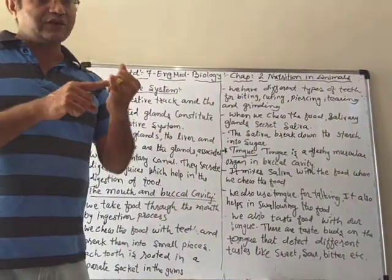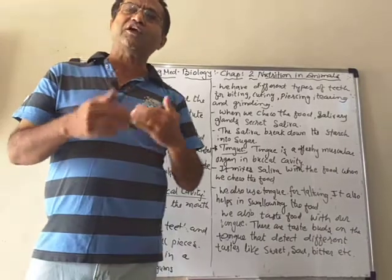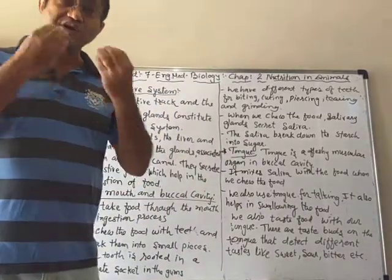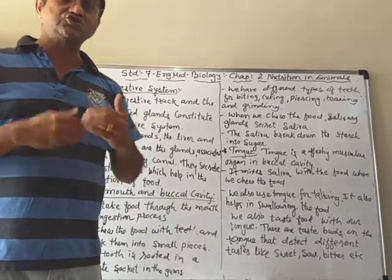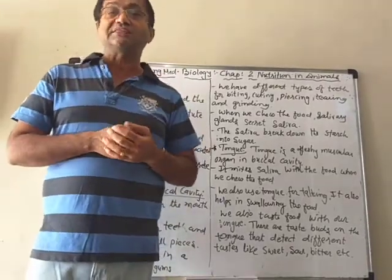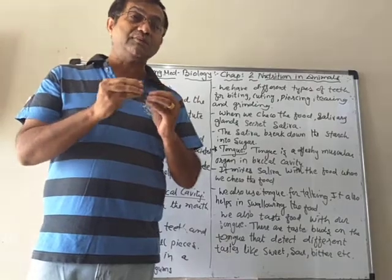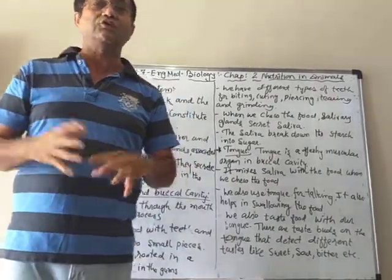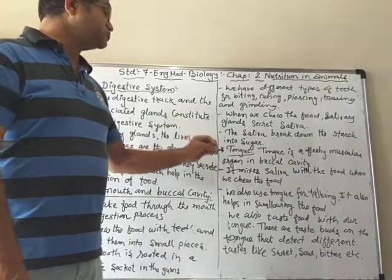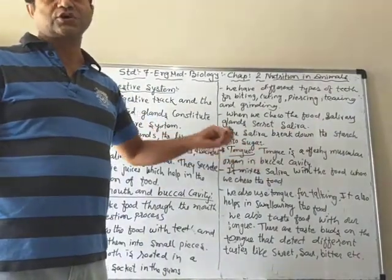Starch is one type of carbohydrate. When there is starch in food it gets digested in the buccal cavity by saliva and turns into sugar. For example, when you eat roti or puri and chew it for a long time, at the end you will feel a sweet taste. That is because saliva breaks down the starch and makes sugar from it, and sugar tastes sweet.